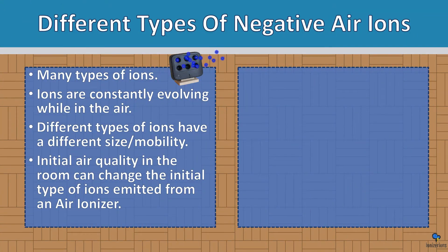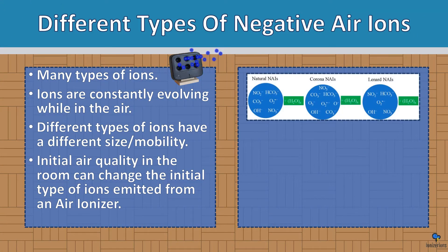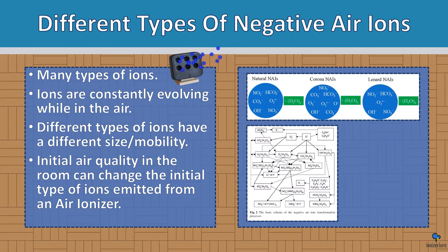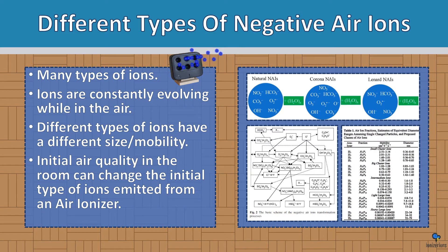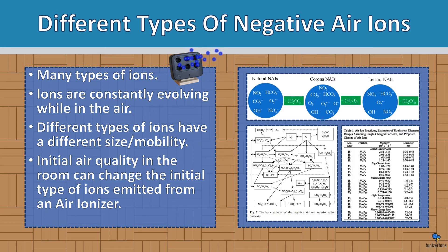Different types of negative air ions: there are many kinds that constantly evolve while they are in the air. Some of them are different sizes and mobilities. The initial air quality in your room can change the type of initial ions you get from your air ionizer. They constantly evolve by transferring electrons. Some of the ions move quicker or wider — it really depends on many variables.